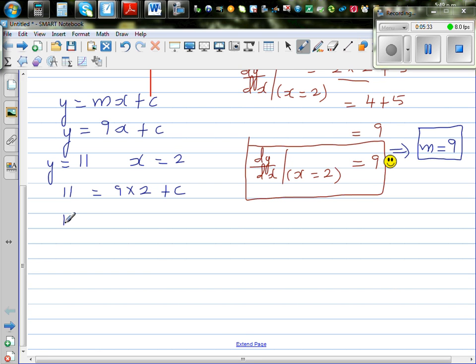So this gives you 11 equals 18 plus c. So taking away 18 from both sides, 11 take away 18 is c, which implies your y intercept is negative 7.